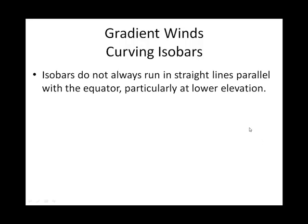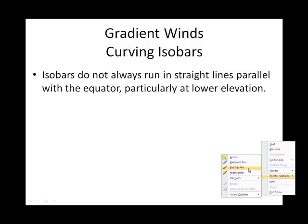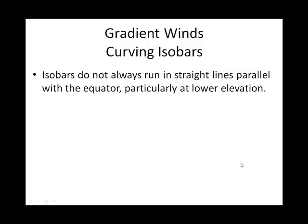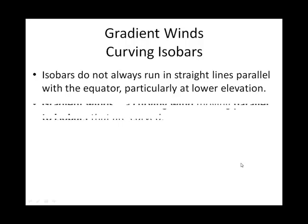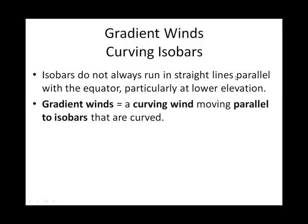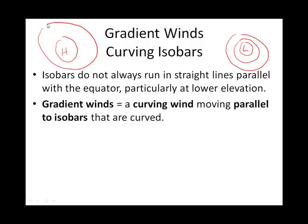If we come down from aloft, what we'll find out is that the pressure gradient, or those isobars, don't always flow along lines of latitude — there's definitely some curviness in the isobars. Near the Earth's surface, we can have a central low or a central high pressure, and these isobars are usually a little more spread out, meaning less of a pressure gradient force. When winds flow between these isobars, we don't call that geostrophic wind like we do aloft — we call that gradient wind.